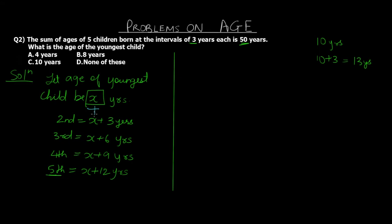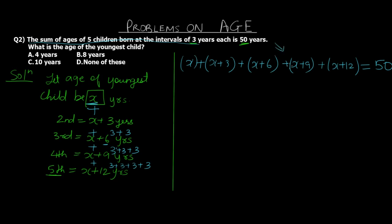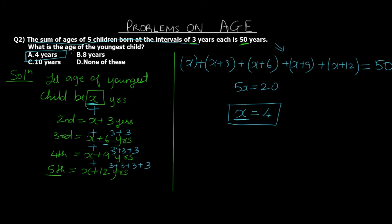The sum of these ages equals 50. So our equation is: x plus (x+3) plus (x+6) plus (x+9) plus (x+12) equals 50. Solving this, we get 5x equals 20, so x equals 4. This x is the age of the youngest child, which is what was asked. Option A (4 years) is the final answer. In these types of problems we translate an English statement into a mathematical equation, making assumptions like letting the youngest age be x.